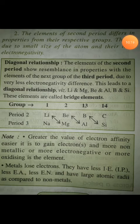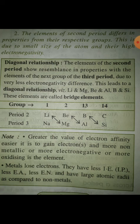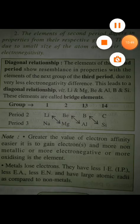Some important additional concepts include the diagonal relationship. Certain second-period elements show resemblance in properties with elements of the next group in the third period — this is called the diagonal relationship. For example, lithium shows a diagonal relationship with magnesium, beryllium with aluminum, and boron with silicon. This chapter is now complete. The next examination will include chemistry, so please study and learn it. You can ask me if you have any questions.